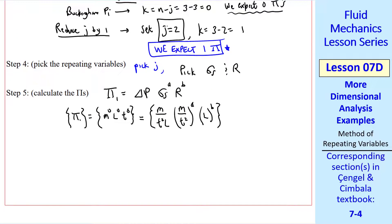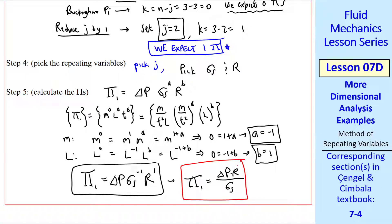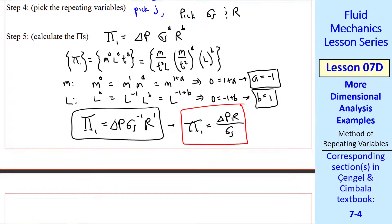Now we force this pi to be non-dimensional. Let's start with mass. On the left hand side we have m to the 0, equal m to the 1, m to the a, equal m to the 1 plus a. We equate the exponents, and we get a equal negative 1. We repeat for l. We get l to the negative 1 plus b. Again equating exponents, we get b equal 1. Plugging in these values of a and b, we have our non-dimensional pi.